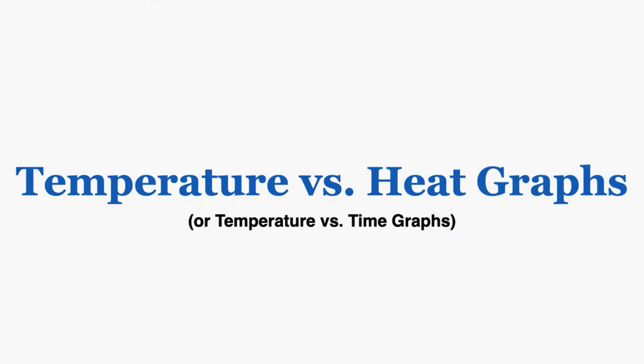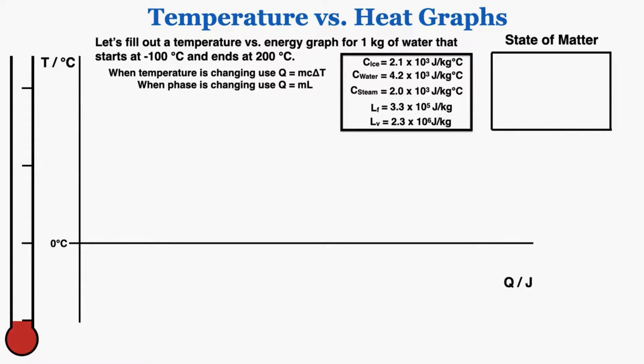This video is about how to read, draw, and do calculations with a temperature versus heat graph or a temperature versus time graph. This is what a temperature versus heat graph looks like. It has temperature measured in Celsius on the y-axis — that could also be Kelvin — and heat measured in joules on the x-axis. I've added a thermometer on the left just to give you an intuition of how the temperature is increasing over time.